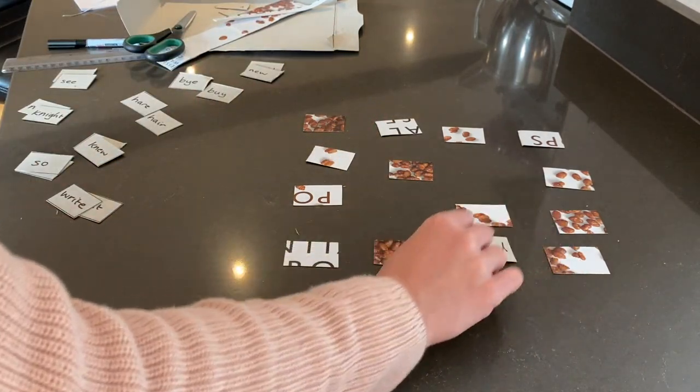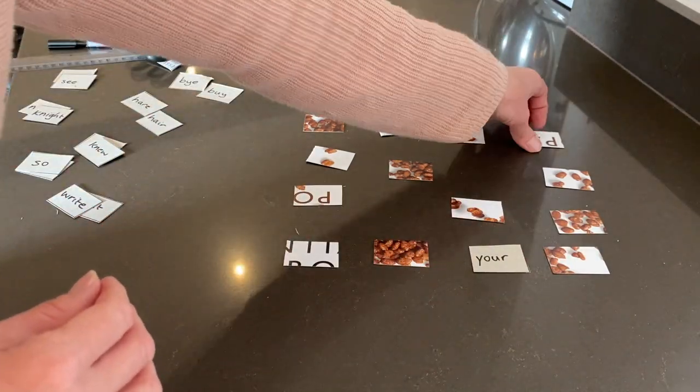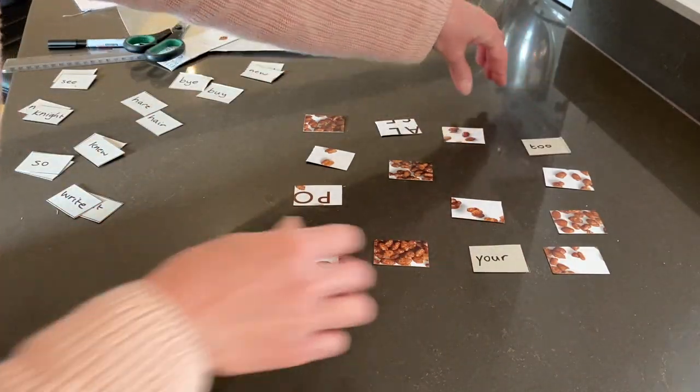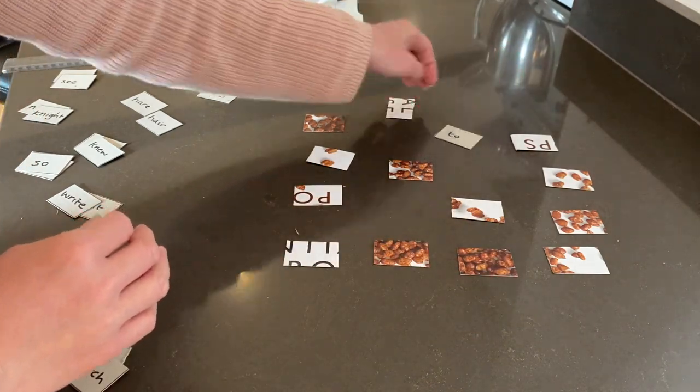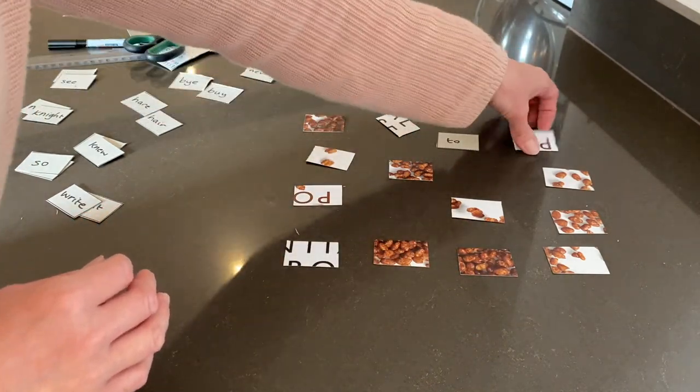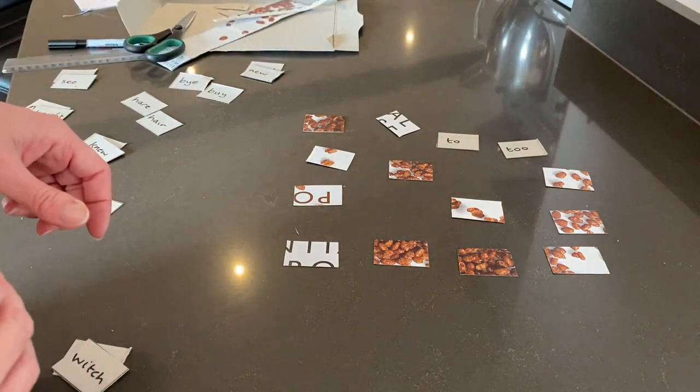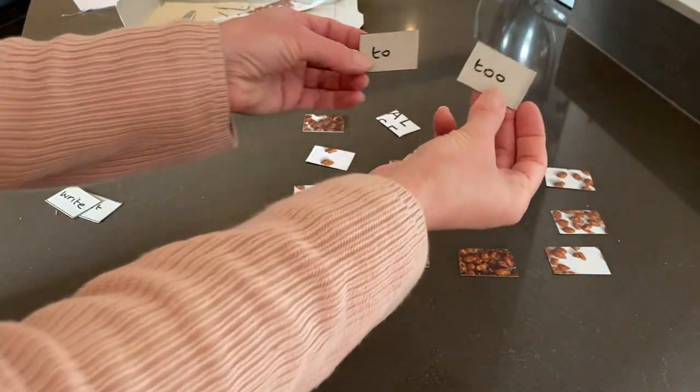When you choose your pairs and you've selected two homophones, make sure that you can describe what the difference is between the two and when you use them. So, for example, if you pick up one of the three twos, so that's the different spellings of the word two with the different meanings, then you can describe which one you have and how you use it.